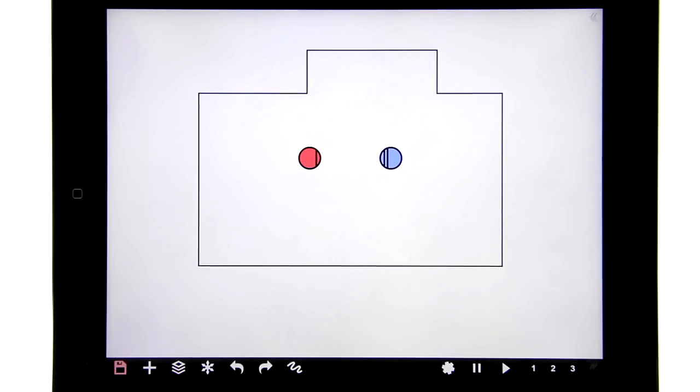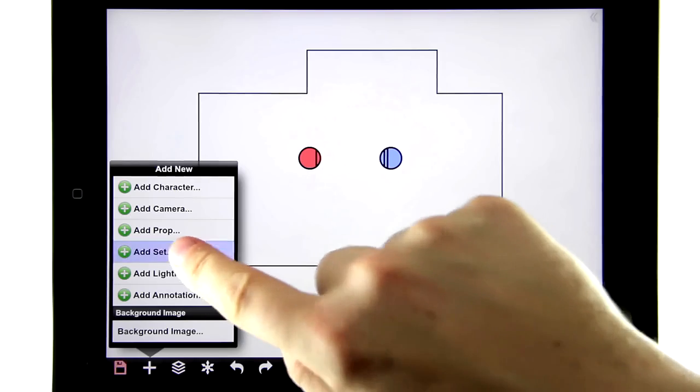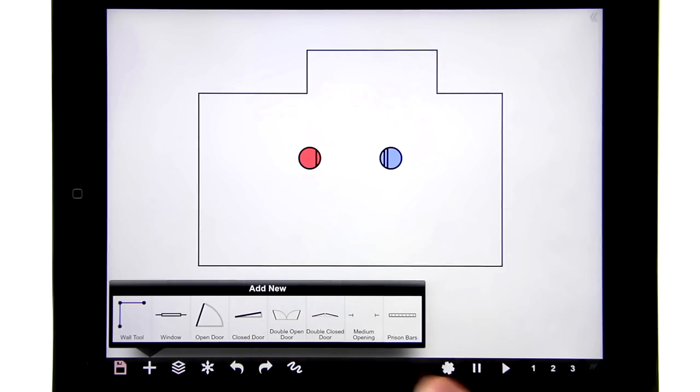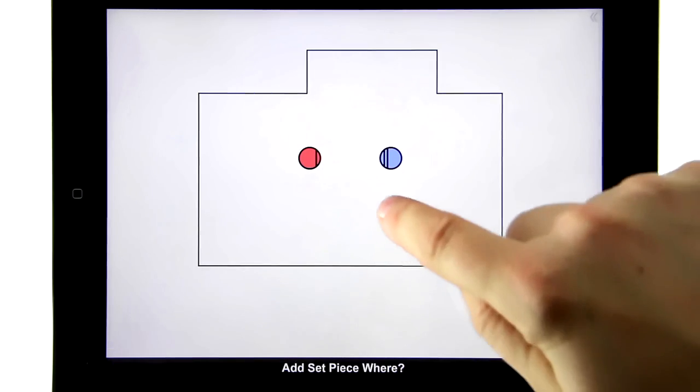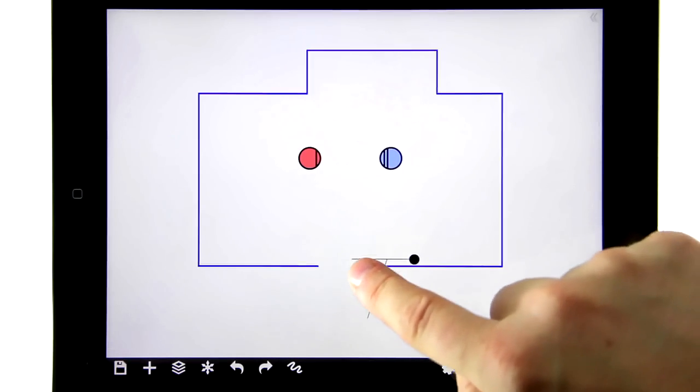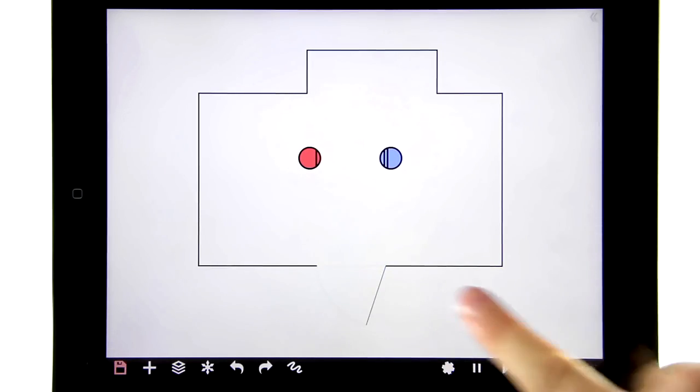Now we want to add some doors and windows, but you don't actually have to draw those yourself. Instead, the rest of the objects in the add set menu are quote-unquote negative objects, which mean they cut a hole. I'm gonna add a door right there, and then when I let go, see it cut a hole in the wall.